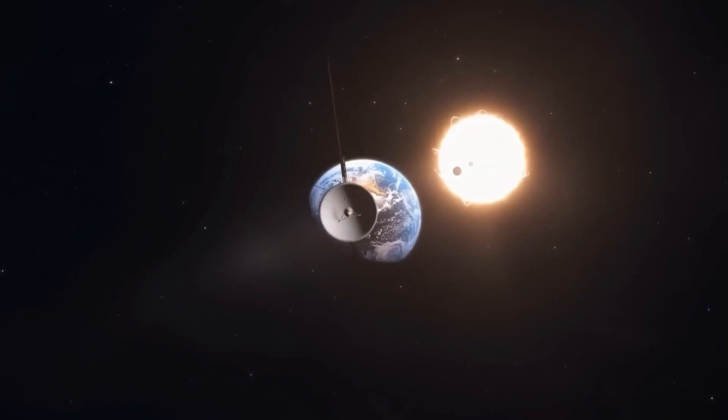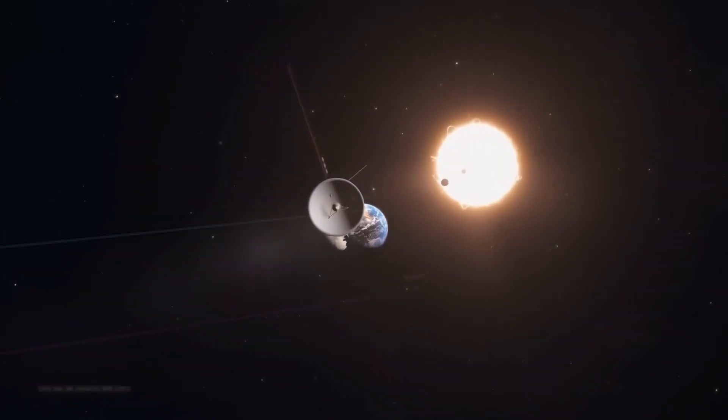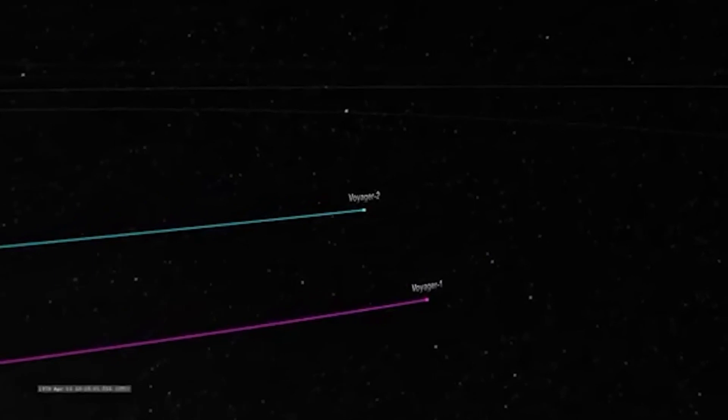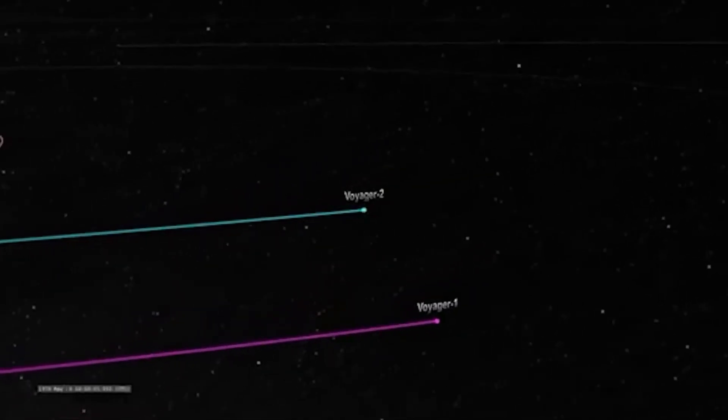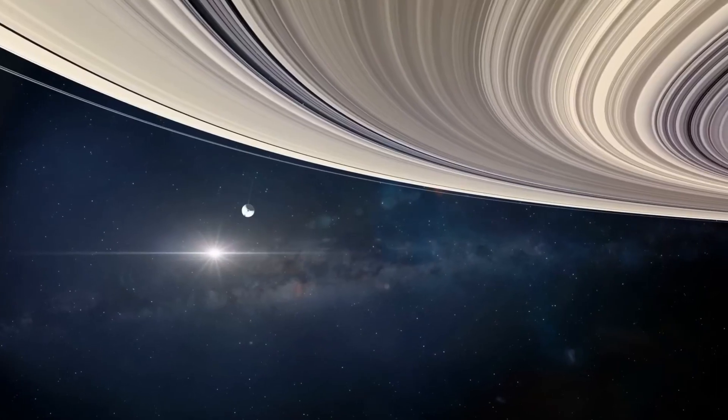For now, they are still transmitting data across unimaginable distances, so far in fact that it takes over 22 hours for a single signal to travel from Voyager 1 back to Earth.